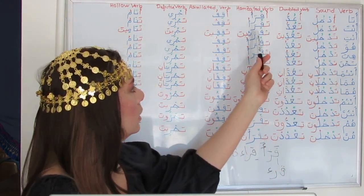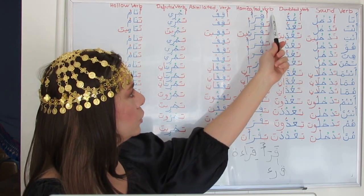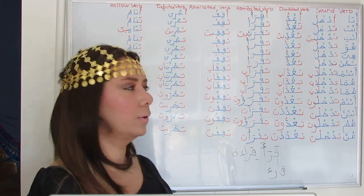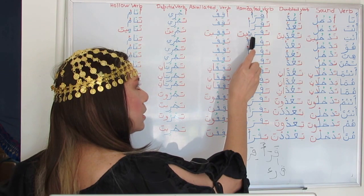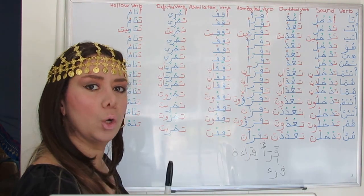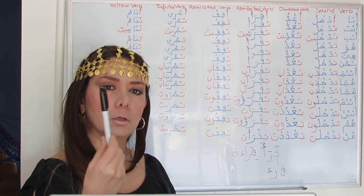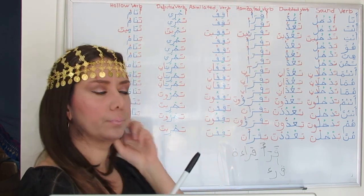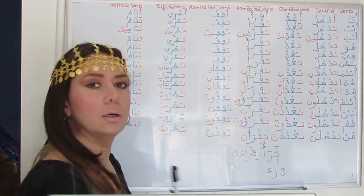Anta taqra'u — following the same pattern with a different prefix. Anti taqra'eena — since we have a Kasra followed by a long vowel Ya, the Hamza will change its seat from Alif to Ya to match the Kasra and the long vowel: taqra'eena.